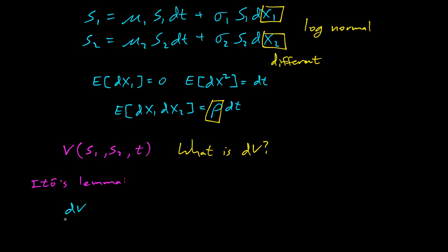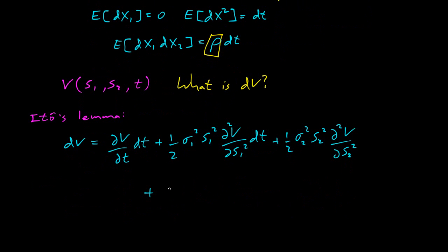So we're going to get DV equals partial respect to T, DT, and then half sigma 1 squared, S1 squared, partial second respect to S1, DT plus a half sigma 2 squared, S2 squared, partial squared, S2. This is all pretty normal so far. Now we're getting some new stuff, and now we're adding sigma 1, sigma 2, rho, S1, S2, second derivative of V with respect to S1, S2, DT.